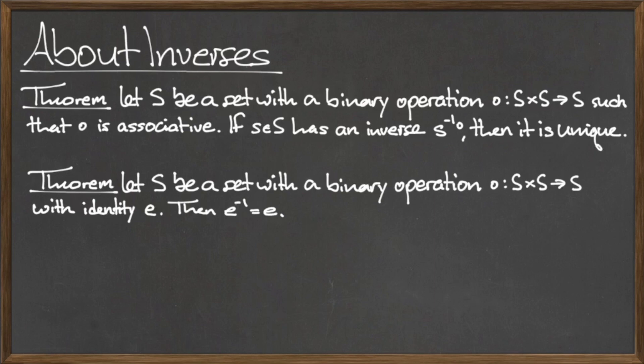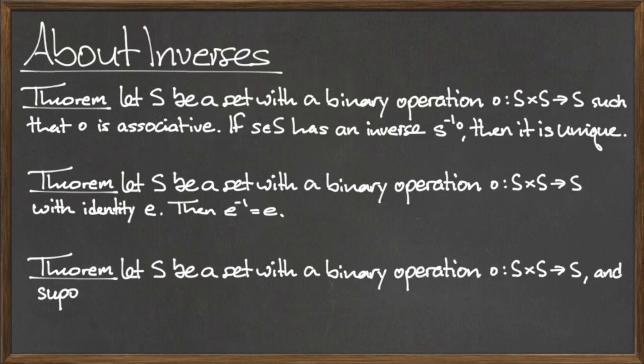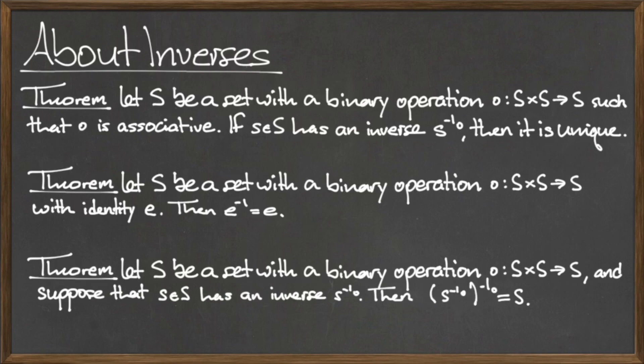The third theorem confirms the relationship between an element s and its inverse. Let S be a set with a binary operation dot from S cross S to S, and suppose that the element little s in the set capital S has an inverse element denoted s-inverse. Then the inverse of s-inverse is equal to the element s itself. In other words, the elements s and s-inverse are inverses of each other.